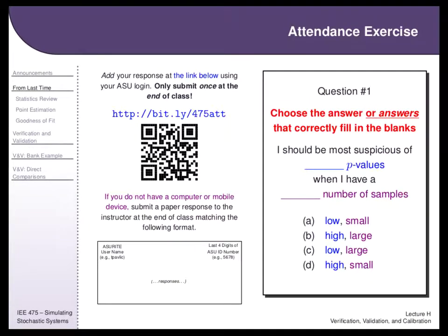Let's keep people engaged with a midterm-like attendance question — you can talk with your neighbors. Question one: fill in the blanks. 'I should be most suspicious of ___ p-values when I have ___ number of samples.' Which answers are correct? There might be more than one. Think about the two-coin example — when you flip two coins and they both come up heads, what do you infer about the coin? Chat with your neighbors and fill that in as question one of your attendance exercise.